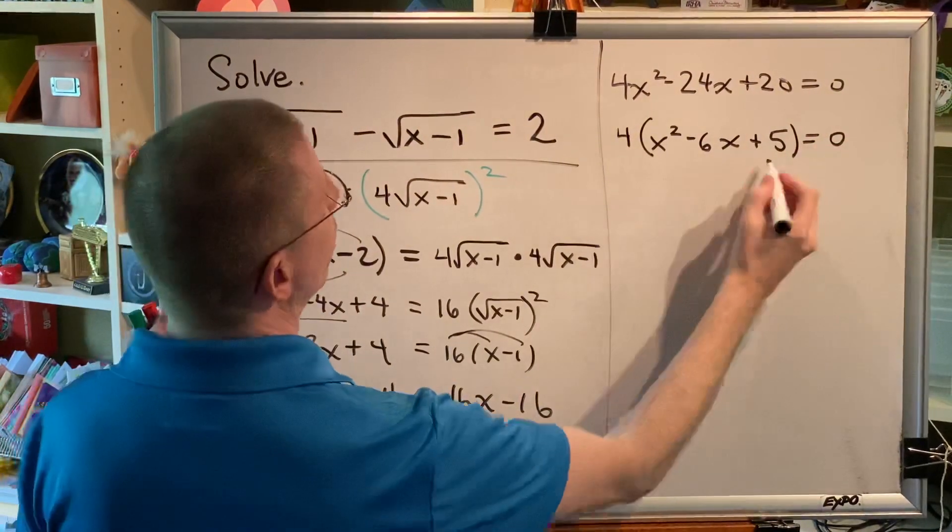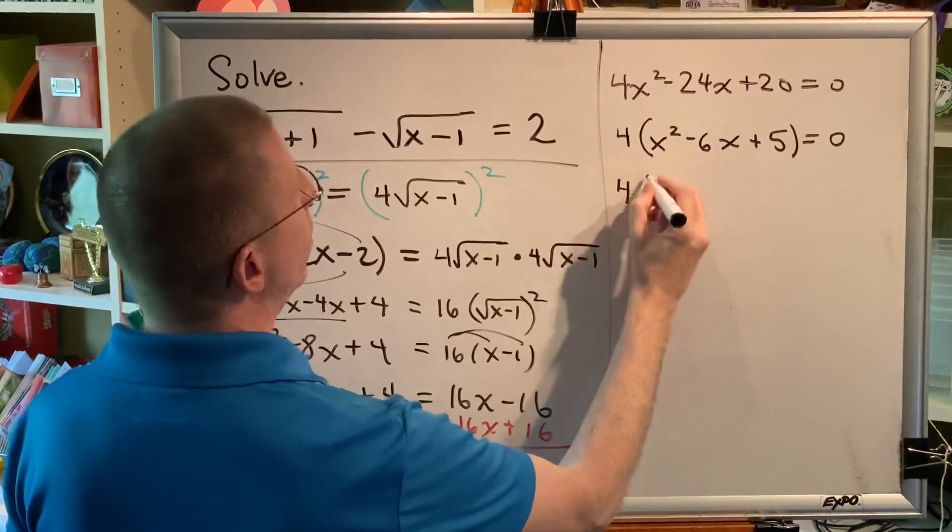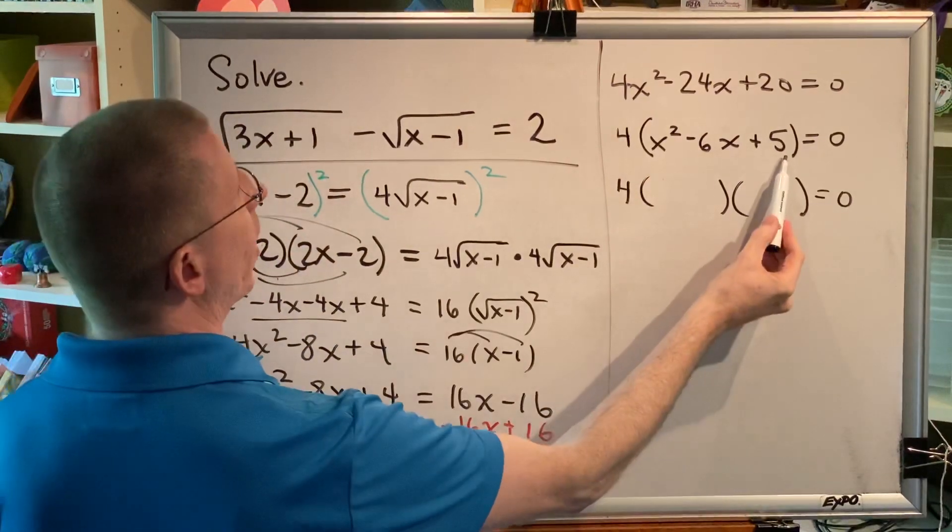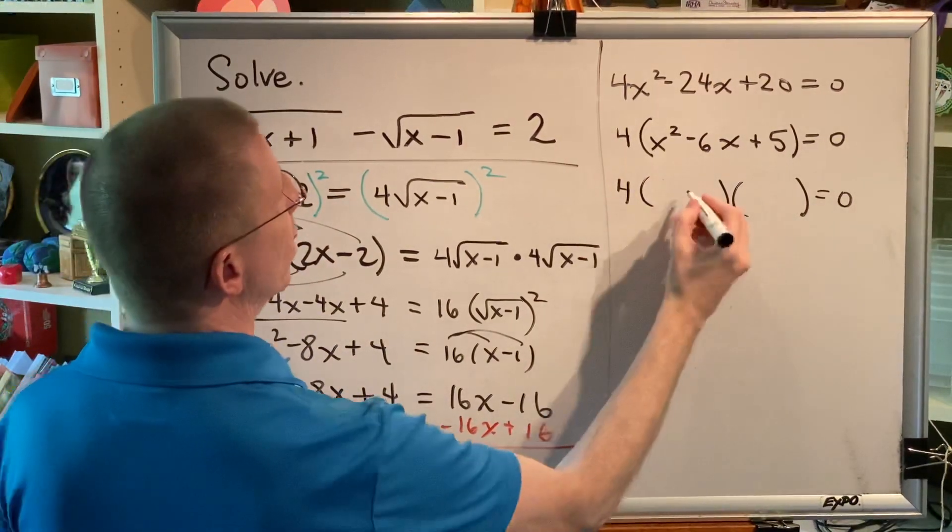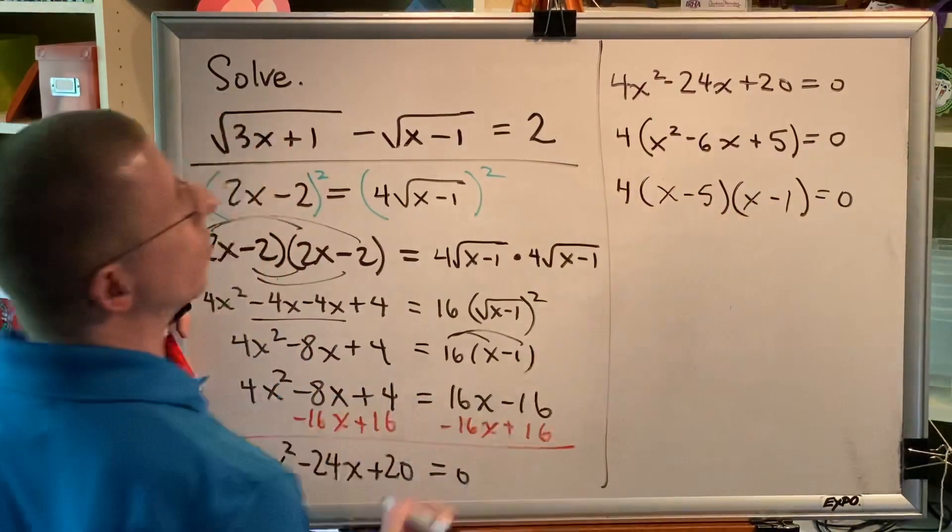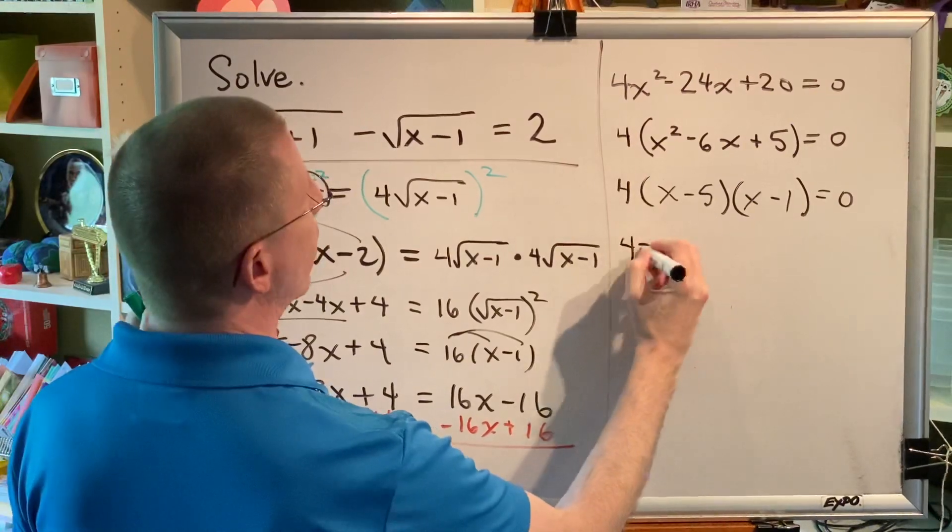Now we can factor this trinomial. The leading coefficient is 1. So that means this is a very simple trinomial. We just need to come up with two numbers that multiply to make 5 but add to make negative 6. Those are negative 5 and negative 1. And then x goes in front of each value. Now use your zero product property and set each factor equal to 0.